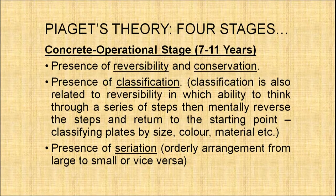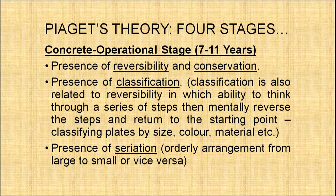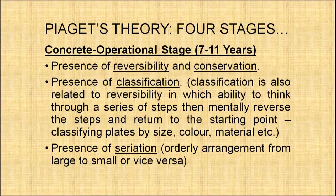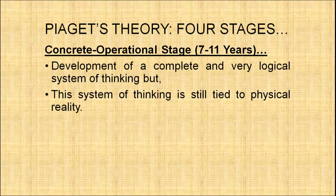Then comes the concrete operational stage (7–11 years), where reversibility and conservation are now present. Classification ability appears — the child can think through a series of steps and mentally reverse them, such as classifying plates first by size, then by color, then by material. Seriation is also present — the child can arrange objects in an orderly sequence from large to small or vice versa. However, the logical system of thinking is still tied to physical reality; the child can only think logically about concrete, physically present situations.